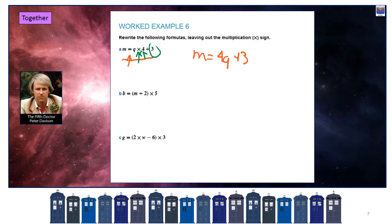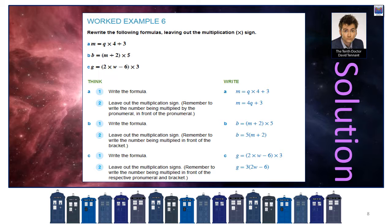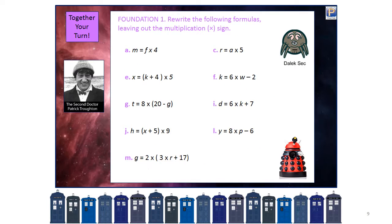For the next example, we don't really need the times sign. We could rewrite it as B equals 5 outside of (M plus 2). We can work out how to get rid of those brackets later, but that's the easiest way. There's no symbol between the 5 and the bracket so it's understood to be 5 times what's in the brackets. The last one: the 3 goes out the front — 3 outside of (2W minus 6). The minus 6 doesn't change at all.